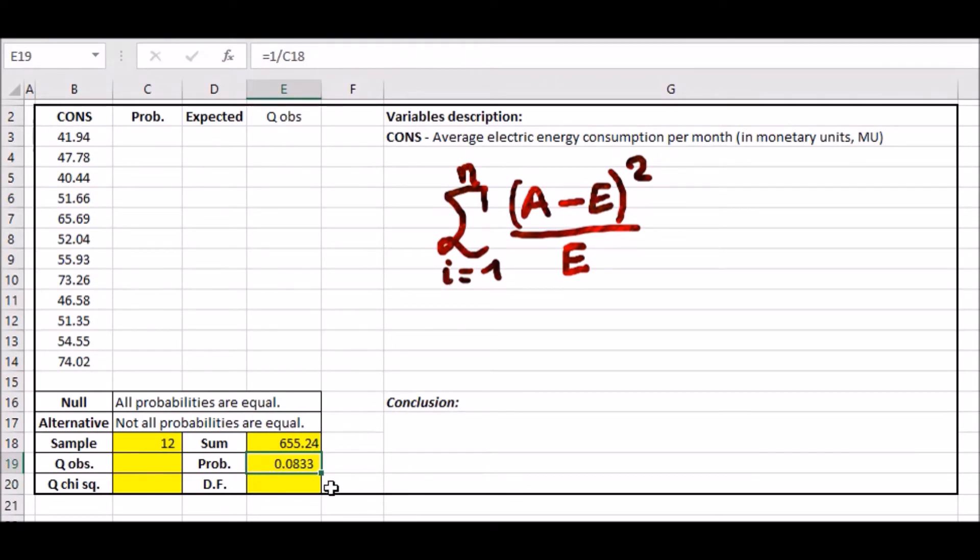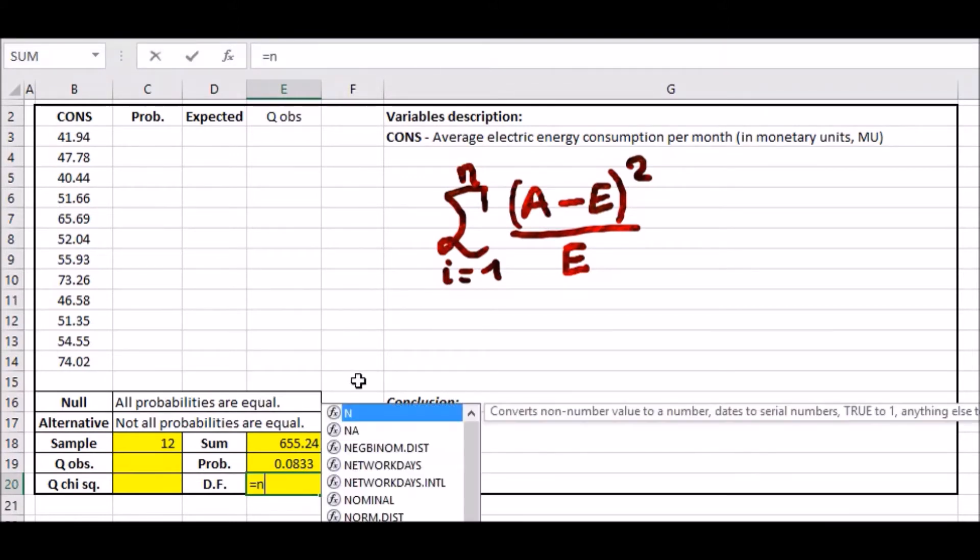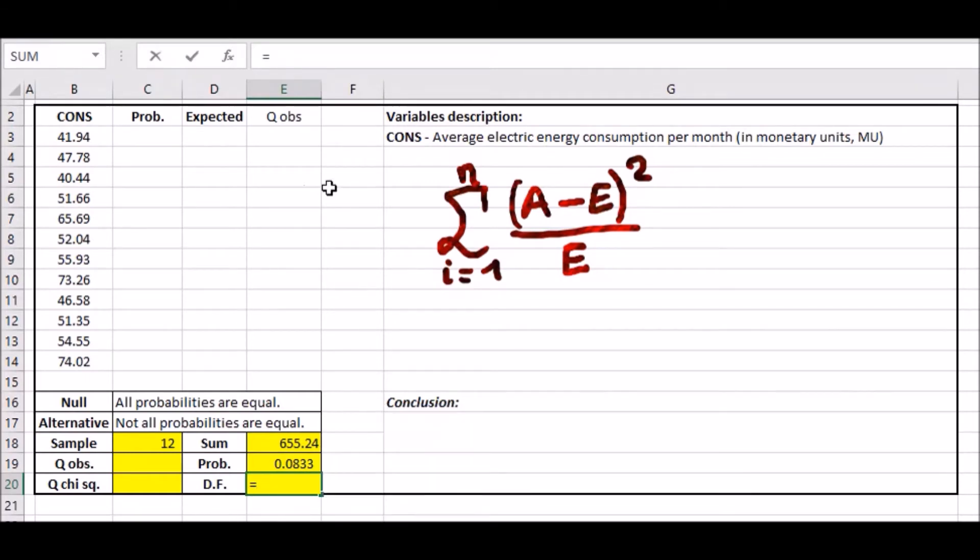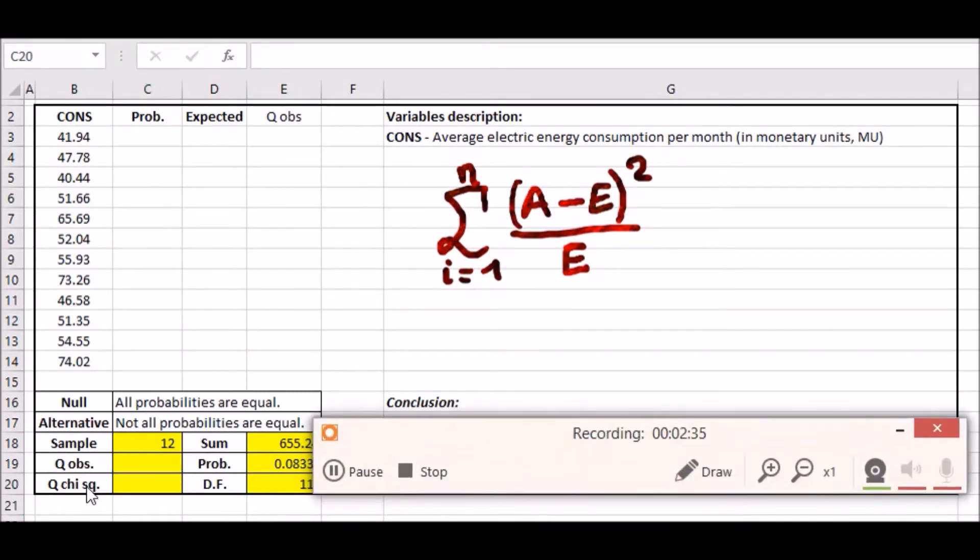For degrees of freedom, this is always calculated as N minus the number of variables or columns used. Our N variable is the sample and we subtract by 1 because we're only dealing with one variable. If we had more options, we'd subtract by 2 and so on. Q obs and chi-squared is obtained from the chi-squared table, which we'll get to in a second.